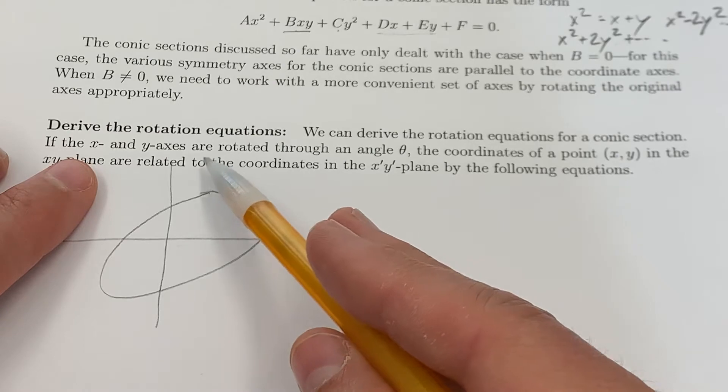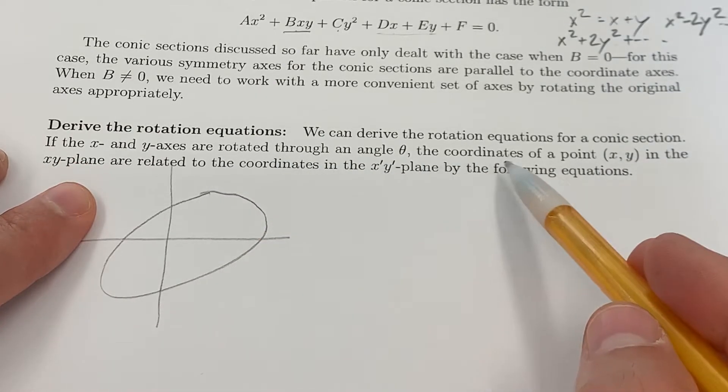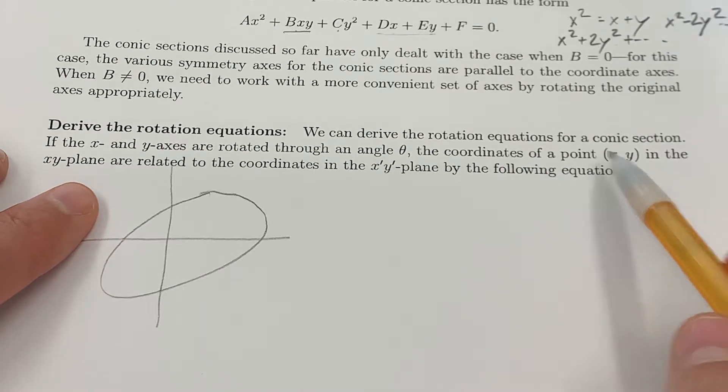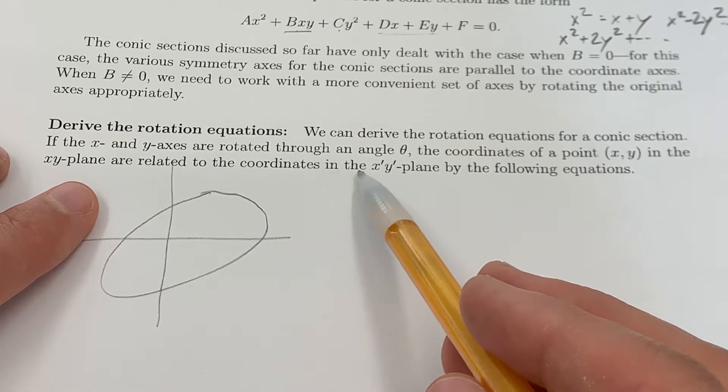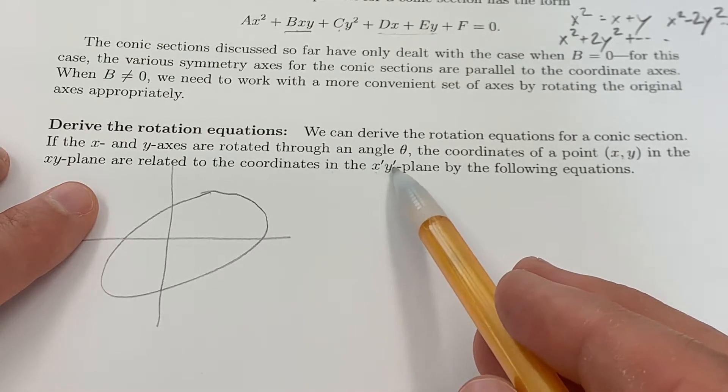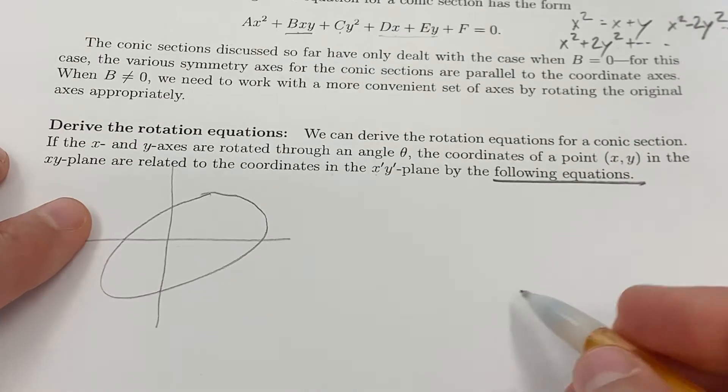If the xy axes are rotated through an angle θ, the coordinates of a point (x,y) in the xy plane are related to the coordinates in the x′y′ plane by the following equations. So let's work out those equations.